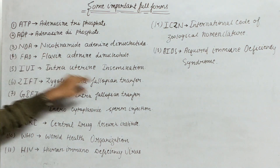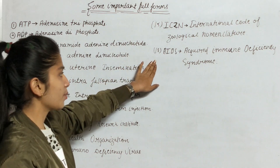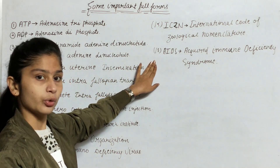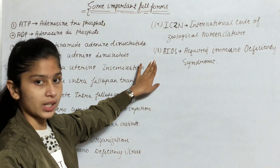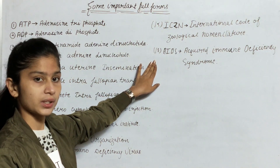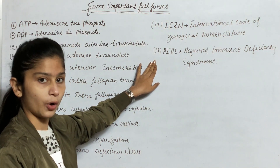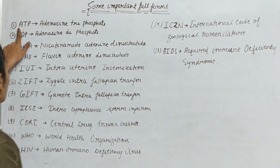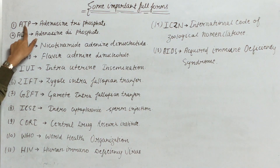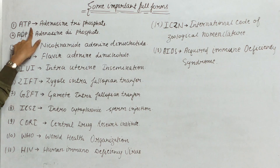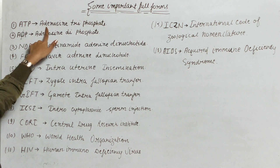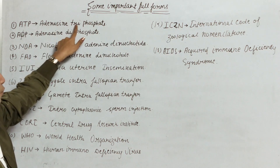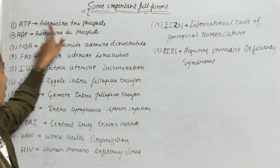In today's video, we will complete 13 full forms from Unit 1st and 2nd. Unit 1st is the most important. So let's start. The first full form is ATP — Adenosine Triphosphate.